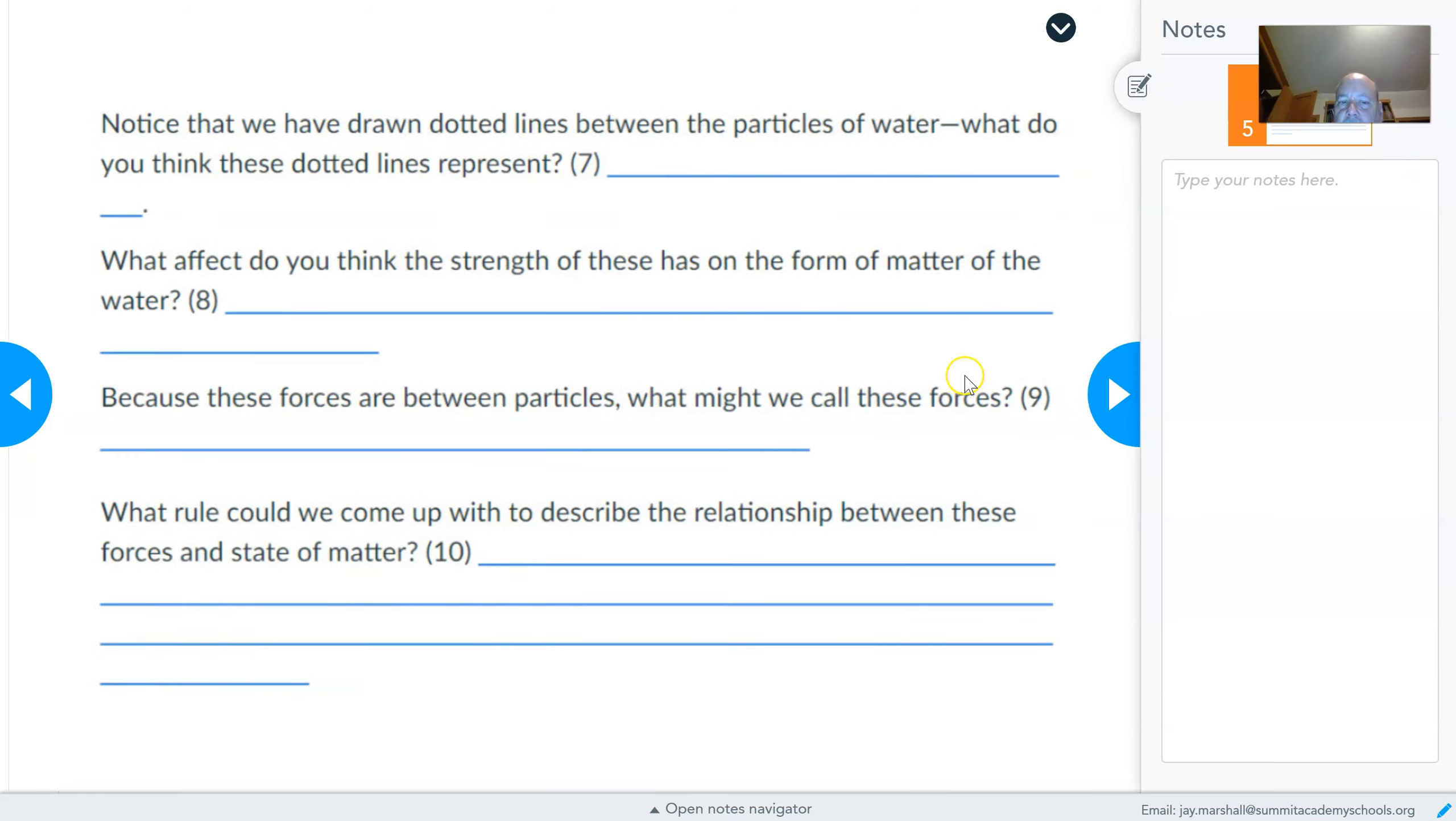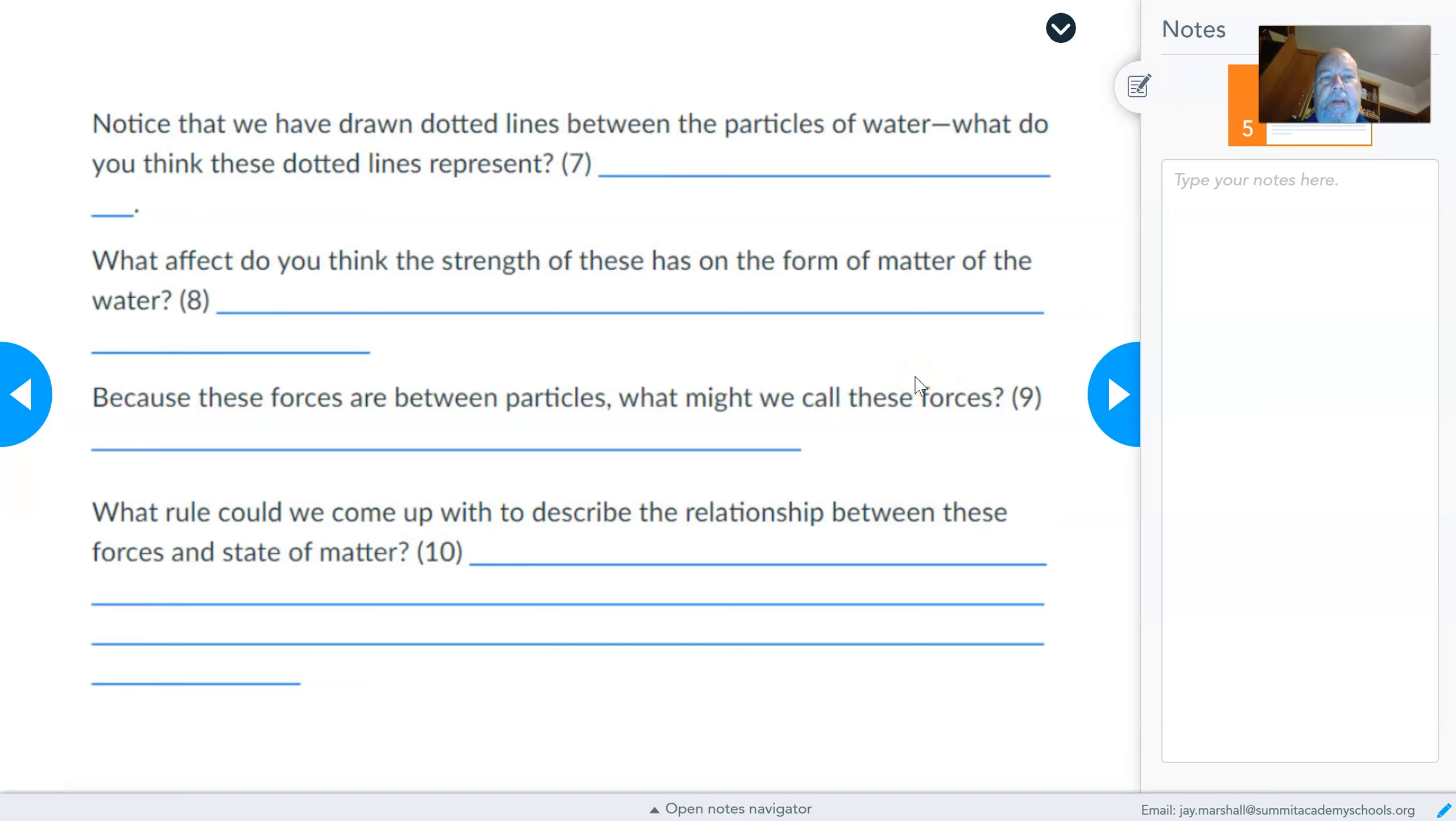Yes, I want this drawing on your worksheet. So let's go back to our screen. We've created this drawing here, and you should have it sitting in front of you now. So let's ask some questions about it or make some statements about it. You've got this drawing. If you're watching this in class, you can see it up on the board. Notice that we've drawn dotted lines between the particles of water, and I've asked you what you think these dotted lines represent.